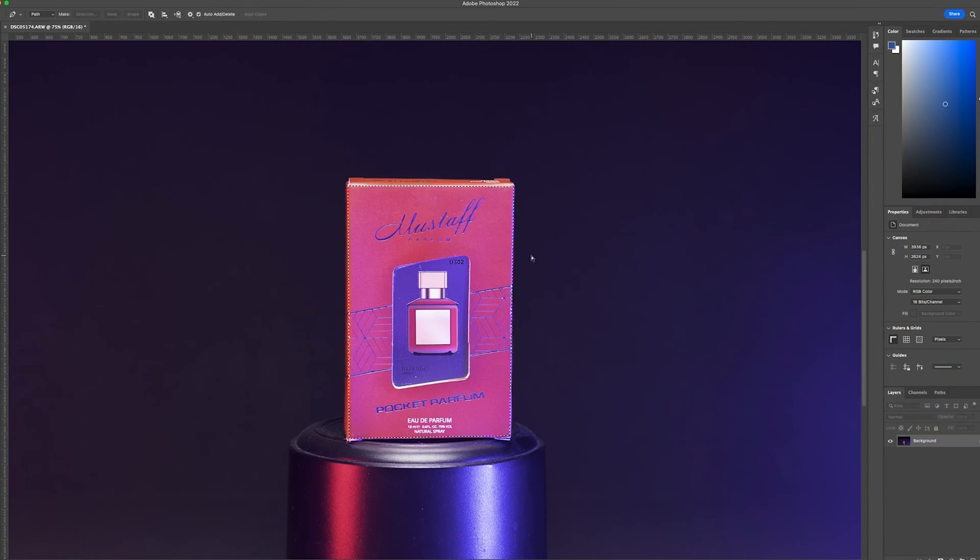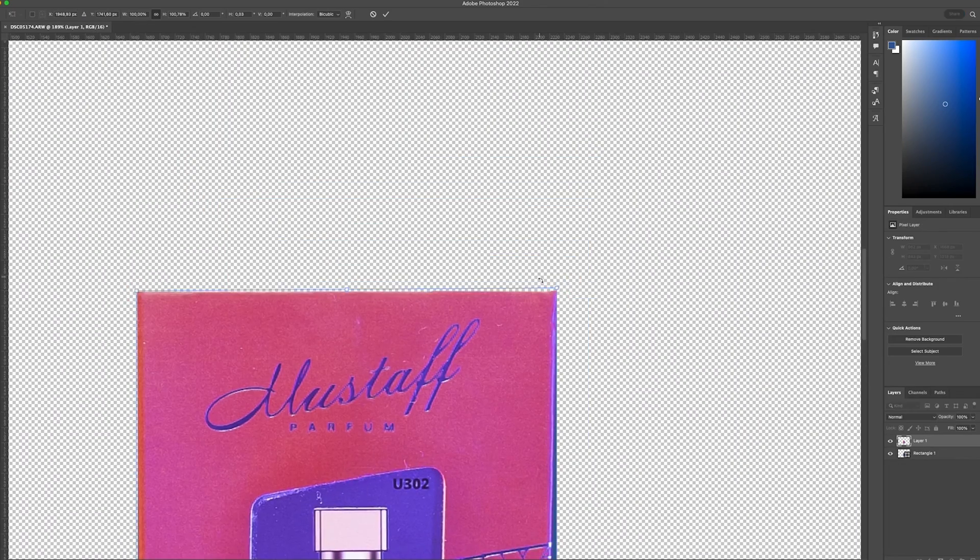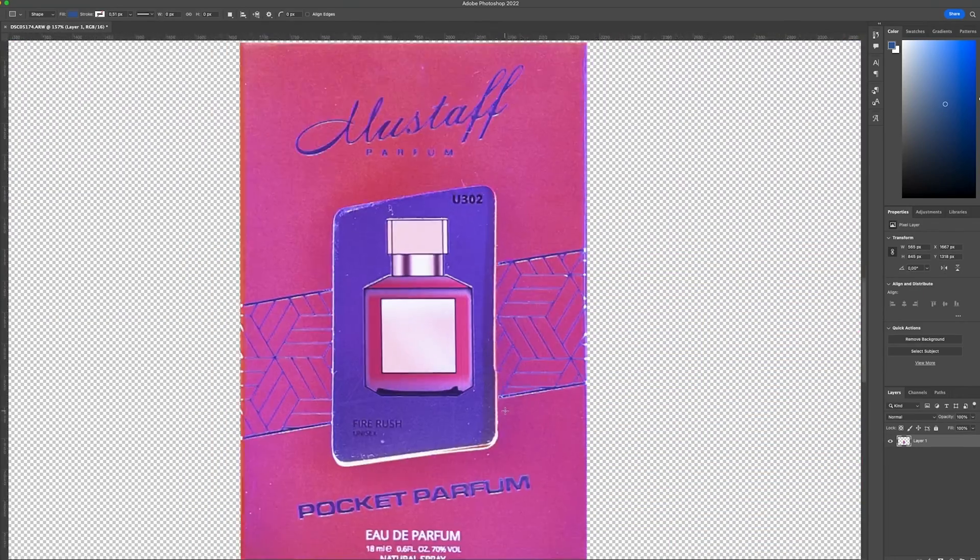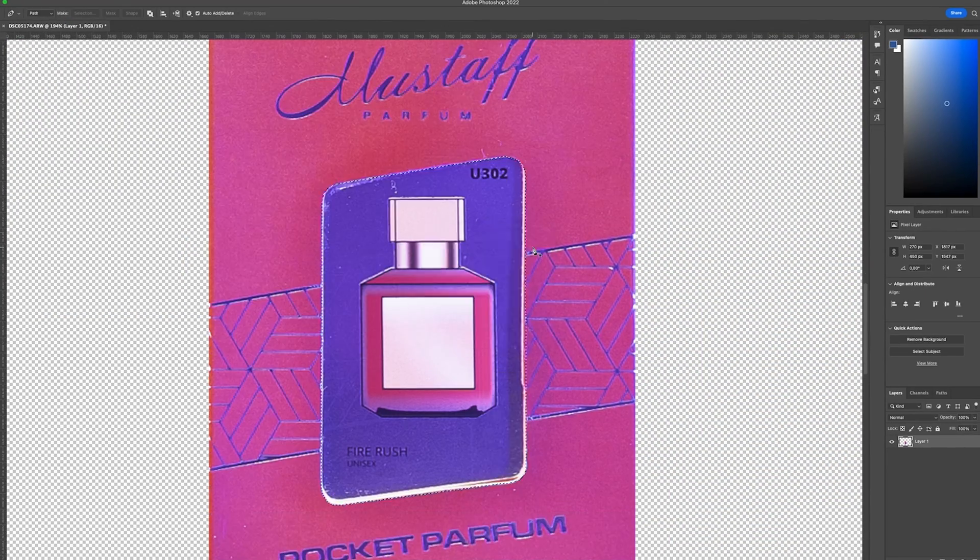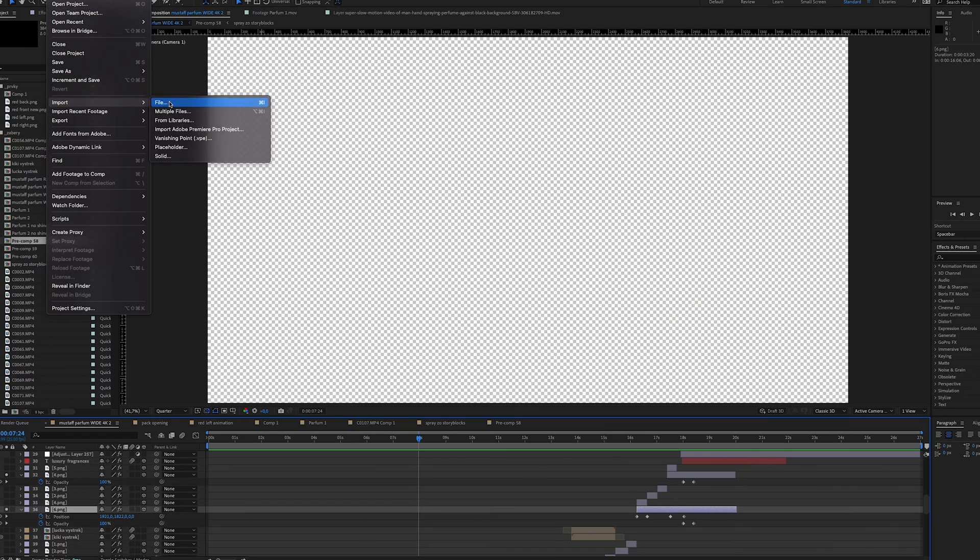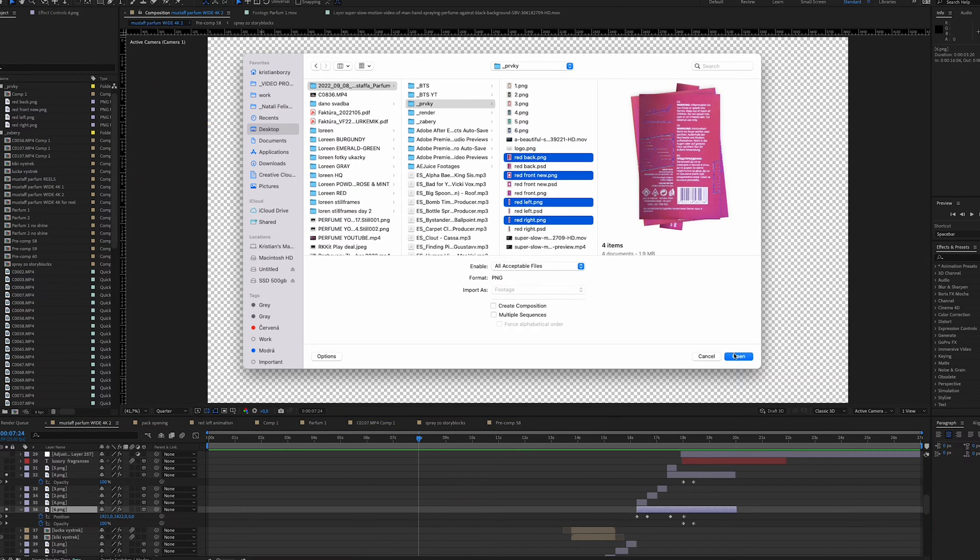Before I dive into After Effects I open all the images of the packaging in Photoshop and remove the background from all the images and then save them as PNG file. Then I import everything to After Effects where the magic happens.